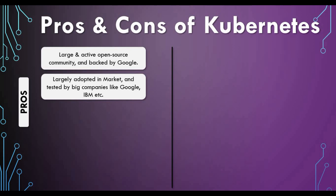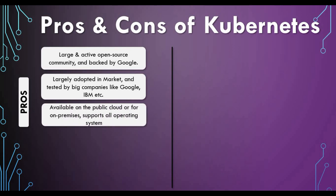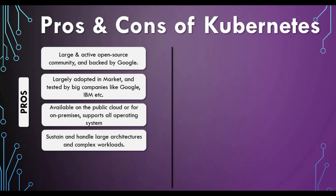Kubernetes is also largely adopted in the market. It has been tested by big companies like Google and IBM. You can also find Kubernetes in public clouds — AWS, GCP, and Azure all have managed Kubernetes versions like EKS and AKS. So you don't have to set up your own cluster; you can use a cloud-managed Kubernetes instance, and it is supported across different operating systems.